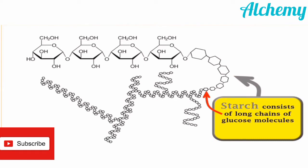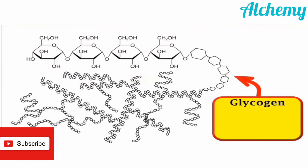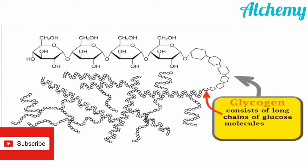Starch contains long chains of glucose molecules with some branching and mainly acts as food storage and structural material of plants. In the case of animals and humans, carbohydrates are stored as glycogen. Glycogen is called animal starch because its structure is almost similar to starch but it is highly branched. Glycogen is present in the liver, muscles, and brain. Whenever the body needs glucose, enzymes break down the glycogen resulting in the formation of glucose.